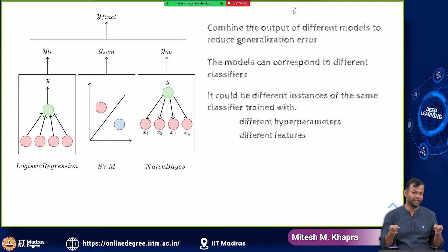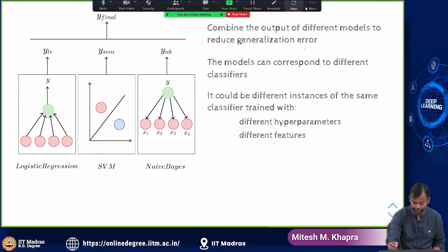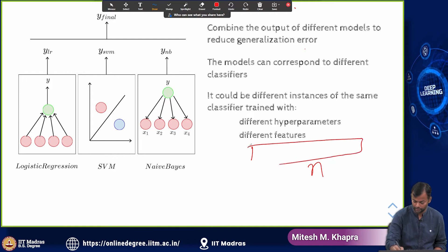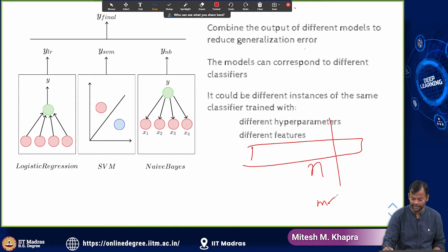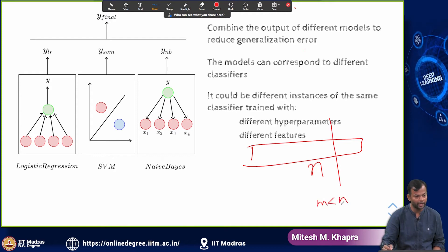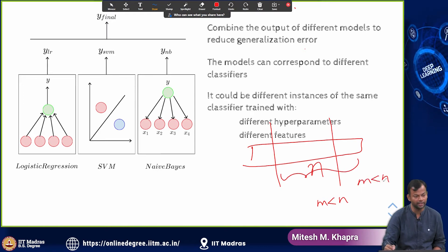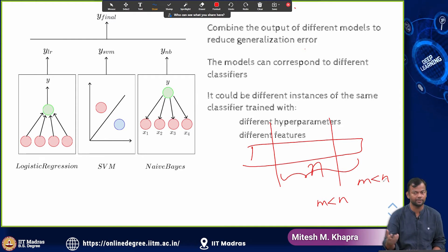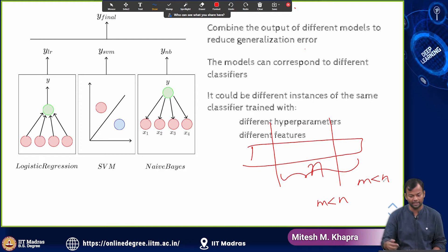Suppose the input data is n-dimensional. I could train the first neural network with some m < n features, and train the second neural network with a different m < n features. I am just taking subsets of the features and training different neural networks with different subsets of n. You can take many such m-sized subsets.